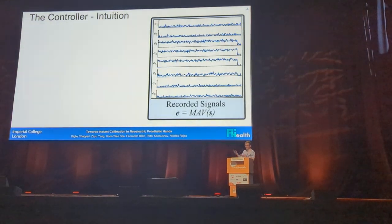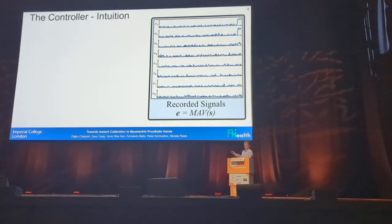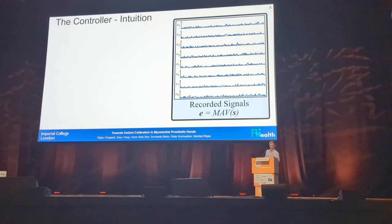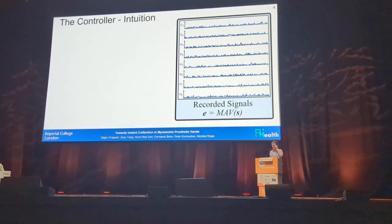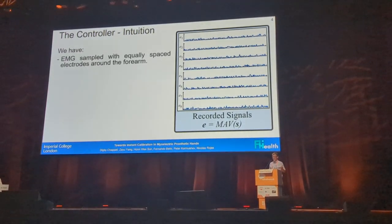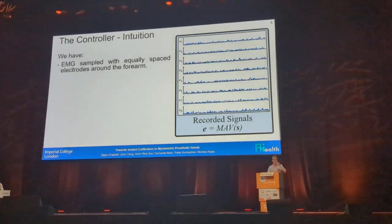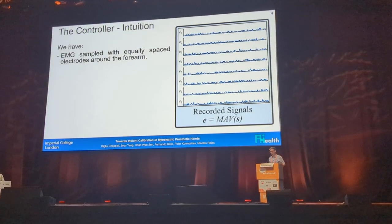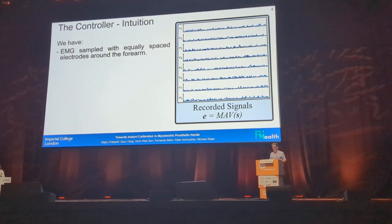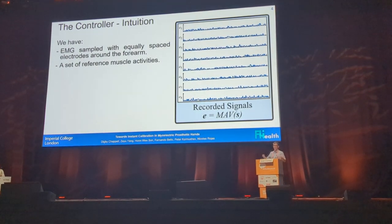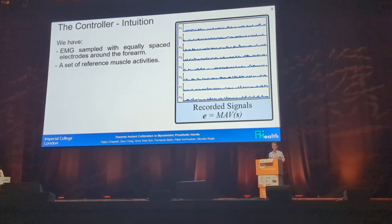So the intuition behind it is we have some sort of EMG signal coming in — sampled from equally spaced electrodes around the forearm. So this is going to be important, keep that in mind. We've got a set of reference muscle activities — pre-hand, we've sat there and recorded actions that we might want to use in control later on.